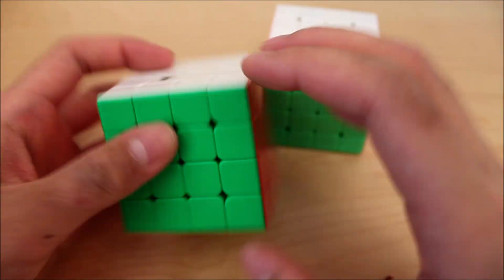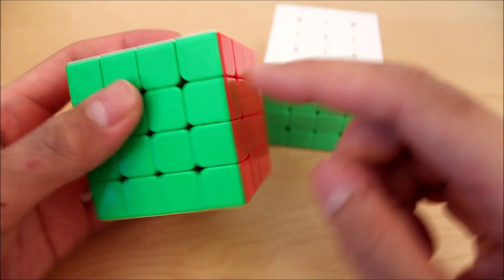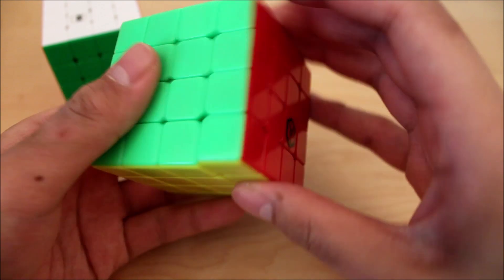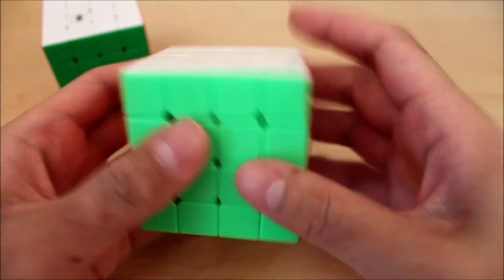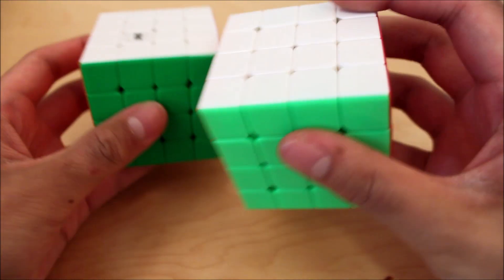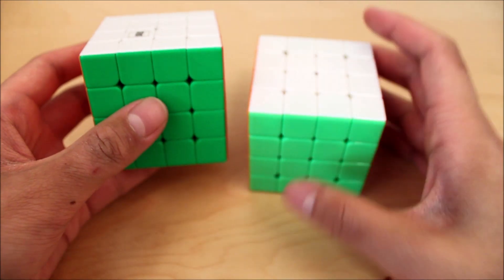These are pretty strong. Well, not that strong because they're the outers, but they're more noticeable than on this one, which is a bit lighter. So yeah, magnet strength are pretty similar, but the WR-M has a tiny bit stronger magnets.